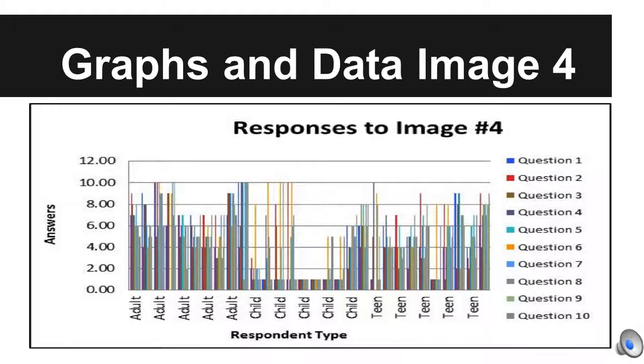Image four, the gothic one, had the lowest results of all four graphs. The amount of answers ranging from one to four is shocking in comparison to the other graphs, in which the numbers vary.